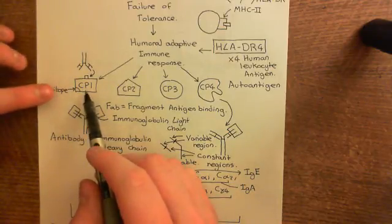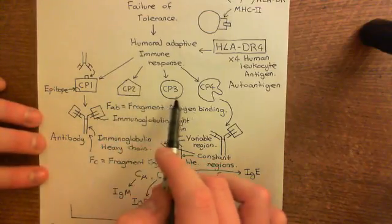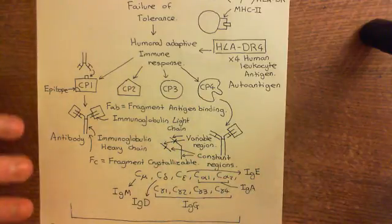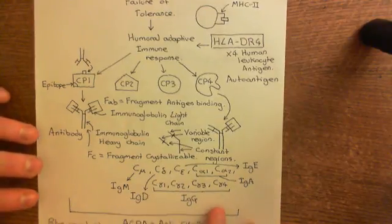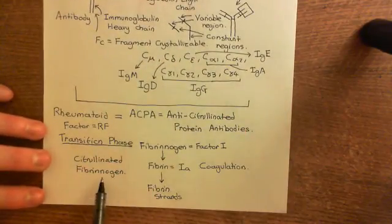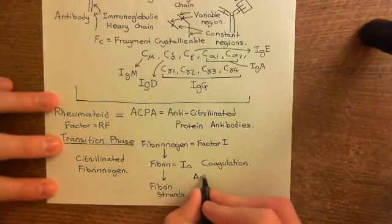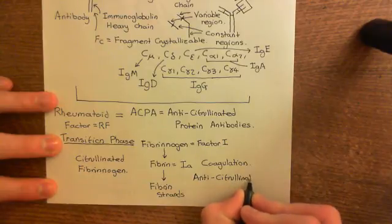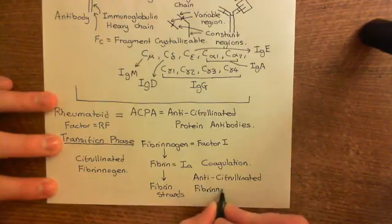You've just got continuous failure in immunological tolerance, and gradually you've launched more and more humoral adaptive immune responses and produced more and more antibodies against these auto-antigens. Eventually citrullinated fibrinogen is going to get targeted, and you're going to produce an anti-citrullinated fibrinogen antibody — an antibody that is targeted against citrullinated fibrinogen.